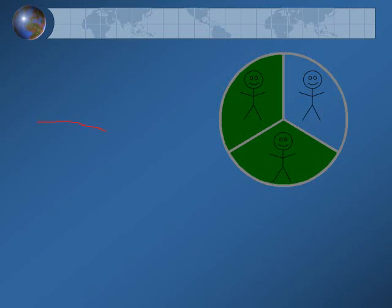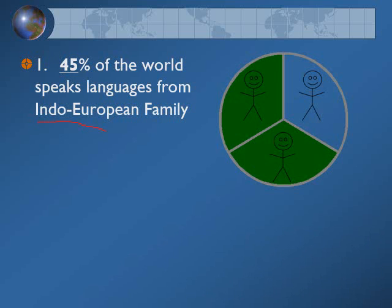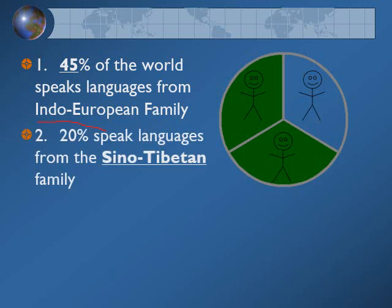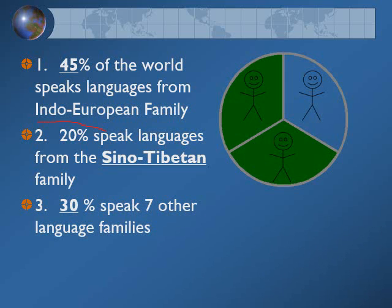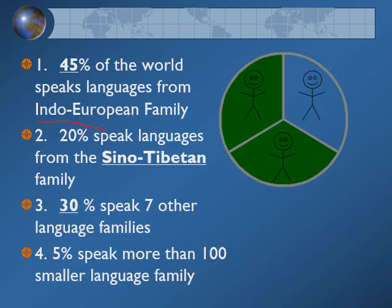45% of the world speaks languages from the Indo-European family — almost half of all people share the same common core. 20% speak languages from the Sino-Tibetan family, and 30% speak seven other language families. So mathematically you have two dominant groups: Indo-European and Sino-Tibetan. And then a small 5% speak more than a hundred smaller language families. There's a lot of diversity, but overall two language family groups dominate.